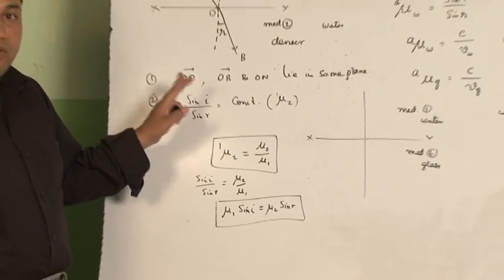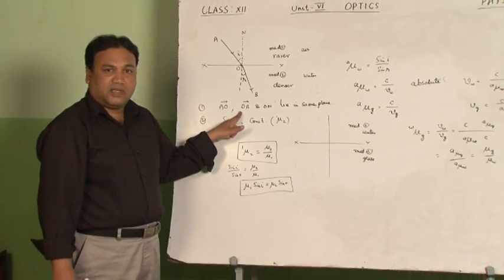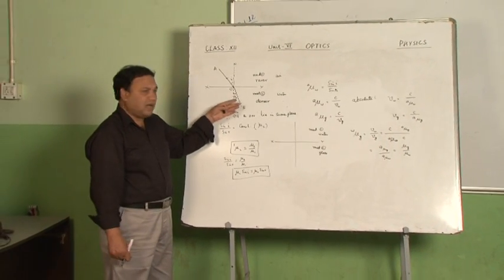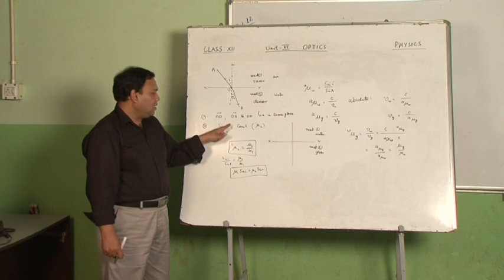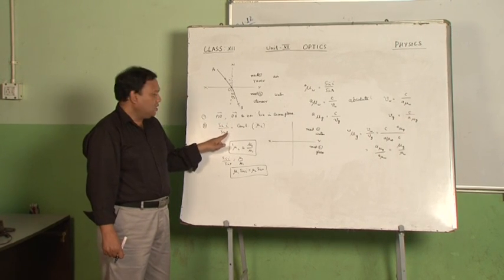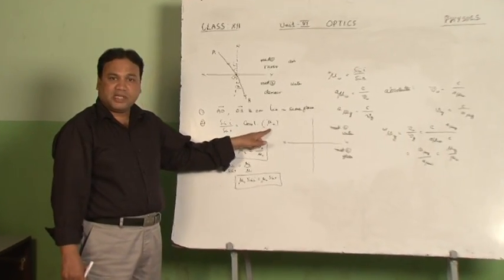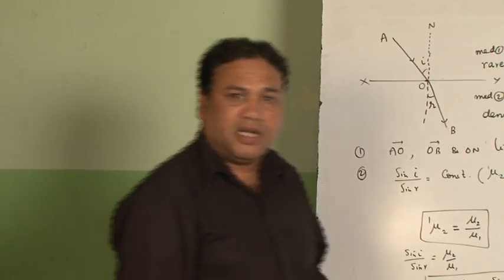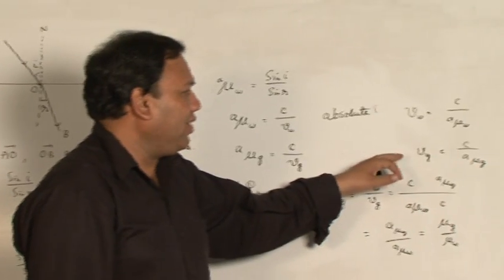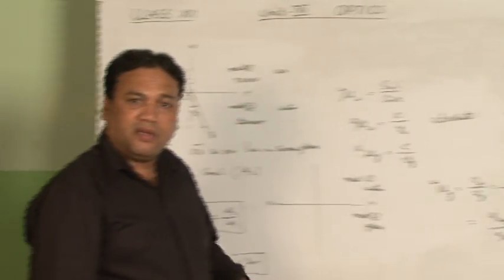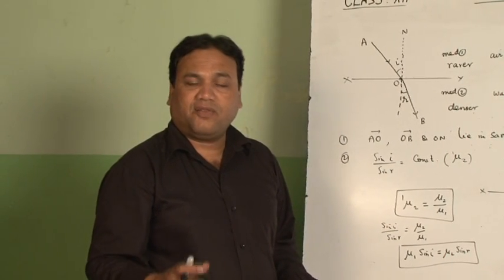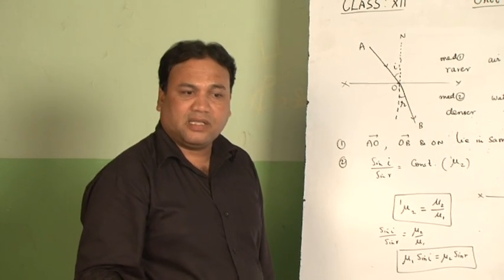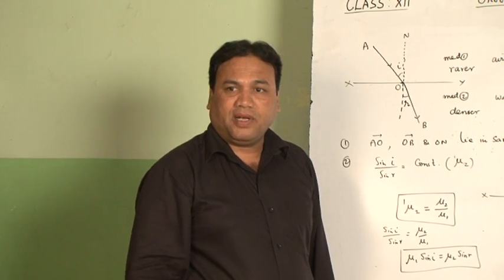Refraction has two laws. The first law says that the incident ray, refracted ray, and the normal at the point of incidence are all lying in the same plane. The second law says that the ratio of sin of angle of incidence to the sin of angle of refraction always remains constant, and this constant is called the refractive index. The refractive index is of two types: one is the absolute refractive index, and the other is the relative refractive index. In absolute refractive index, the first medium is taken as air or free space, whereas in relative refractive index, both media may be any type apart from air.